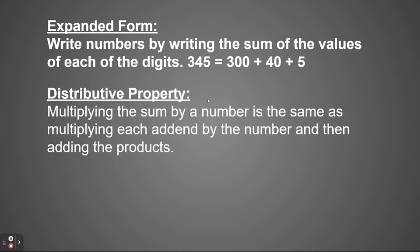We're also going to be revisiting the distributive property. We've talked about the distributive property already but let's review what that means. It just means that multiplying the sum by a number is the same as multiplying each addend by the number and then adding the products.